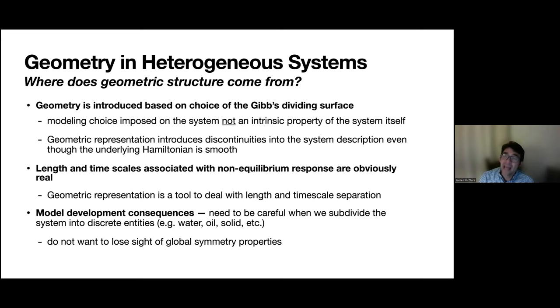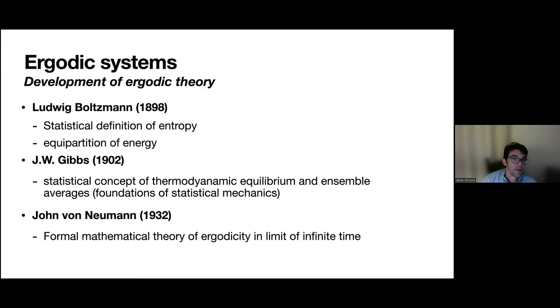We need to think of geometric representation as a tool to deal with length and time scale separation, and not lose sight of global symmetry properties. Conservation of energy applies to the whole system, and if you just look at individual phases you end up doing more bookkeeping than if you look at the system as a whole. This drives some of our choices about when to subdivide a model.